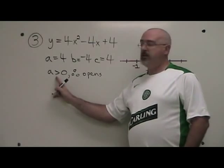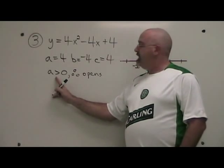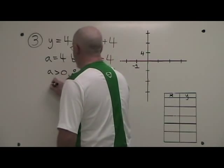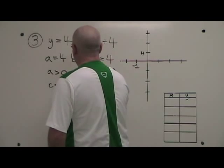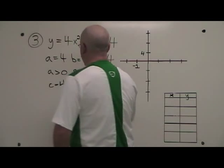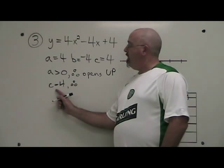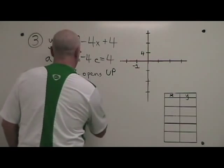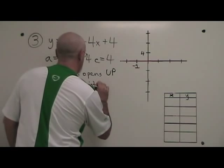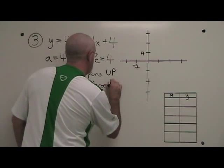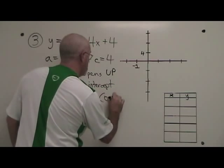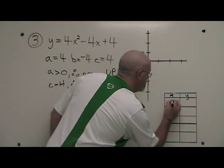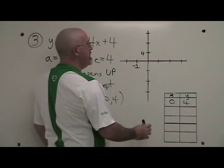a is positive, it's greater than 0. Therefore, the direction of the curve is upwards. c equals 4, therefore our y-intercept is (0, 4). Let's put this into the table of values and on the graph.